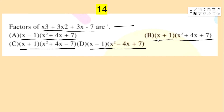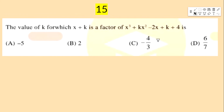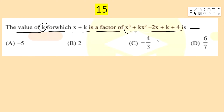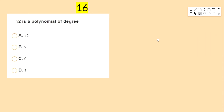Next question: the value of k for which x + k is a factor of x³ + kx² − 2x + k + 4 is — options: −5, 2, −4/3, 6/7.